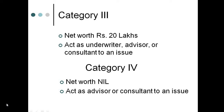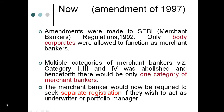Category 4 did not require any net worth but could only act as an advisor or consultant, not even an underwriter. But changes were made, and in 1997 amendments were made to the SEBI Merchant Bankers Regulations Act. Only body corporates were allowed to function as merchant bankers — this was one important change. Multiple categories of merchant bankers were abolished and there was now only one category. If this merchant banker wanted to do the job of underwriting or portfolio management, they would have to seek separate registration.